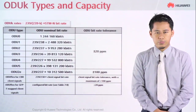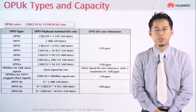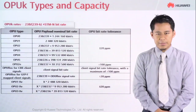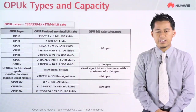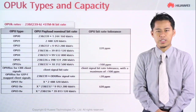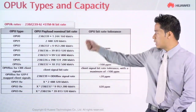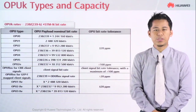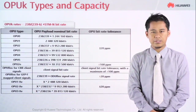The next one will be the OPUk types and capacity, using the same method as the previous OTUk and ODUk calculations. There will be a formula to calculate these as well.